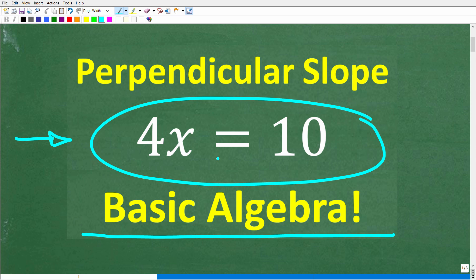What we're looking for is the slope of a line that runs perpendicular to this line. There is an infinite amount of lines that would run perpendicular to this line, but we want to find the slope of any line that is perpendicular to the linear equation 4x is equal to 10.